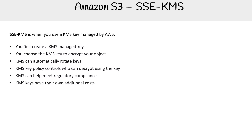KMS keys have their own additional cost — it's usually around $1, at least in US or Canadian currencies. Also, AWS KMS must be in the same region as the bucket, because it doesn't go across regions — that's just how it works.